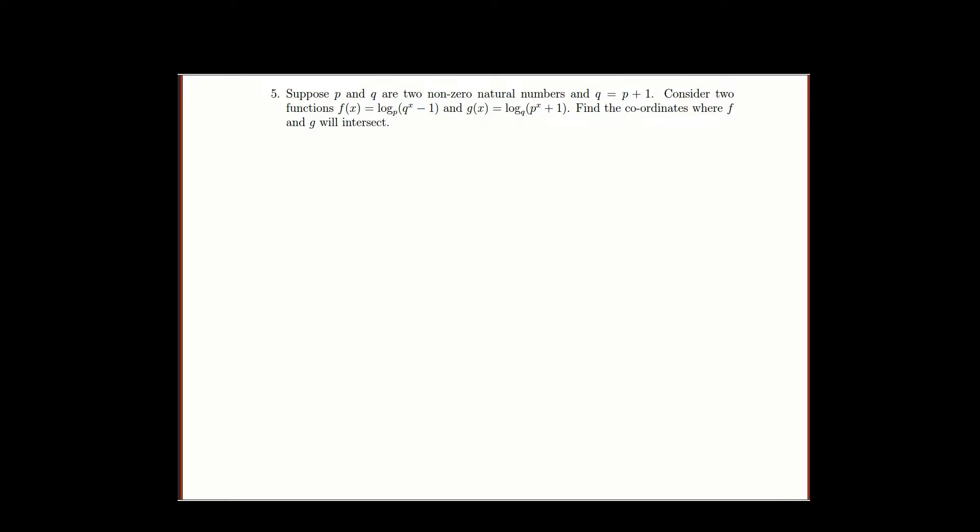Let us see what the fifth question is. In the fifth question, p and q are two non-zero natural numbers with the condition q equal to p plus 1. We are given two functions f(x) and g(x) and we have to find the coordinates where f and g will intersect. f and g will intersect means at that point f(x) must be equal to g(x), so we have to find the solution of that equation.